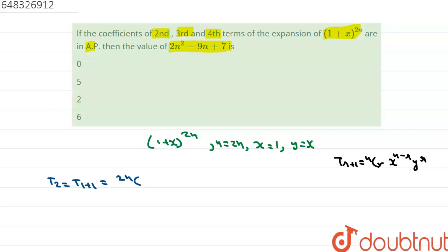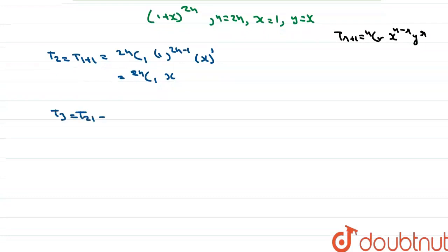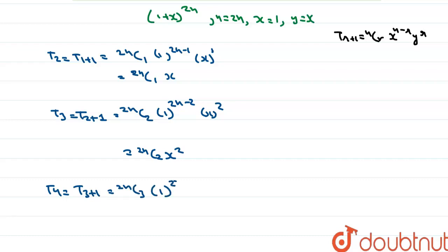So T2 = T(1+1) = 2nC1 · 1^(2n-1) · x^1 = 2nC1 · x. Similarly, T3 = T(2+1) = 2nC2 · 1^(2n-2) · x^2 = 2nC2 · x². Similarly, T4 = T(3+1) = 2nC3 · 1^(2n-3) · x^3 = 2nC3 · x³.